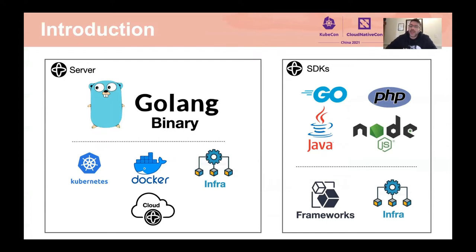One is the Temporal server and one is the SDKs. On the server side, it's basically a Golang binary that can be deployed in many different ways — for example Kubernetes, Docker, or really any infrastructure you might have available. In addition, Temporal also provides a cloud offering. On the SDK side, Temporal provides a programming language model for building your business logic and applications — also called workflows — and you can write them using Go, PHP, Java, and Node.js.